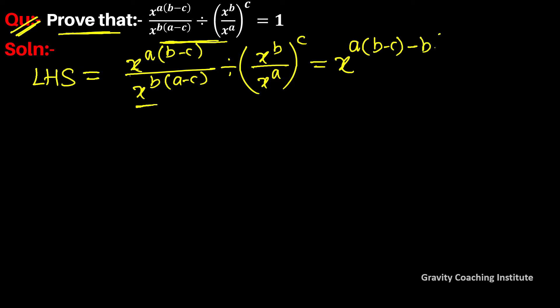So here, LHS equals x to the power (b minus a) to the power c. Now if we calculate the power, we get b minus a times c minus a times b plus b times c, divided by x to the power a to the power c times (b minus a).